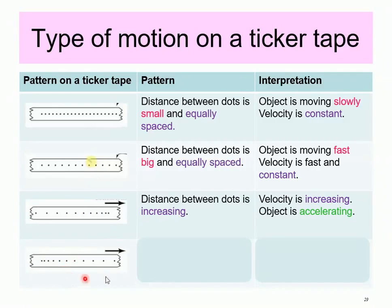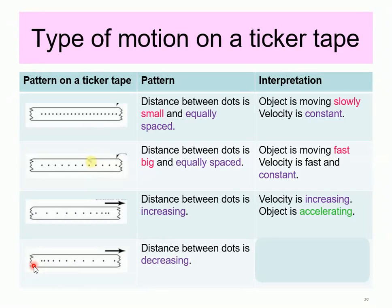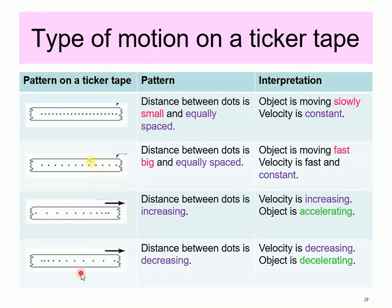For the last diagram, this is the direction of the arrow towards the right. The distance is big, but as it moves, it becomes smaller and smaller. So the distance between the dots is decreasing. The interpretation for this ticker tape is: velocity is decreasing, object is decelerating. This is the type of motion for a ticker tape for one strip.